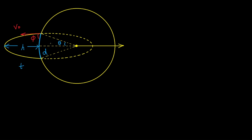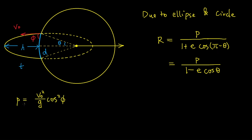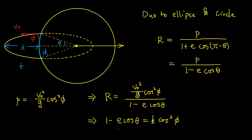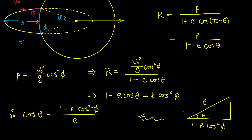Let's now go back to the original diagram. We denote θ as the angle between the radius vector to the launch position and the radius vector to the apogee. Since the launch position is one of the intersections between the orbit and the planet's surface circle, we have r = p / (1 + e·cos(π − θ)). Since cos(π − θ) = −cos θ, substituting p = v0²/g · cos²(φ) and simplifying gives 1 − e·cos θ = k·cos²(φ). Solving for cos θ, we get (1 − k·cos²(φ)) / e, giving us d = 2θr.